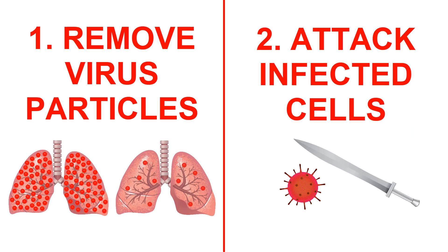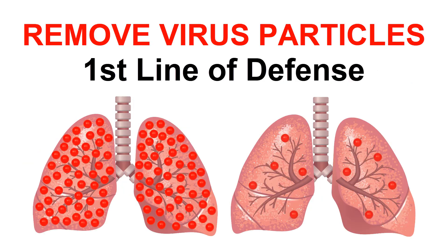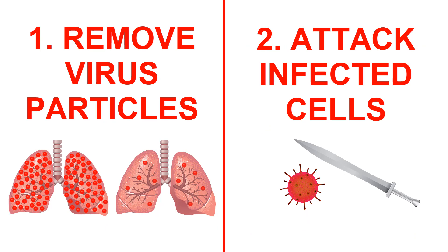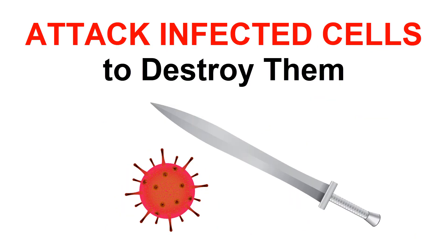The first step is to remove virus particles before they can infect you using your body's built-in air filter. It is your body's first line of defense against airborne virus particles. The second step is to attack infected cells that the first step missed, to destroy them using your body's attack immune system, which must research a new virus before it attacks it.